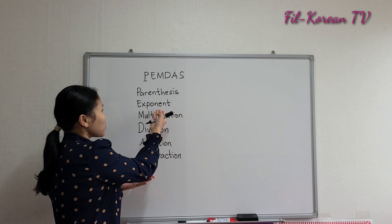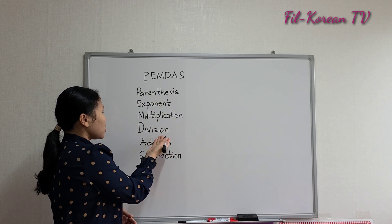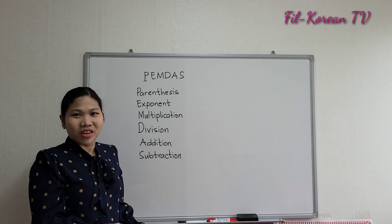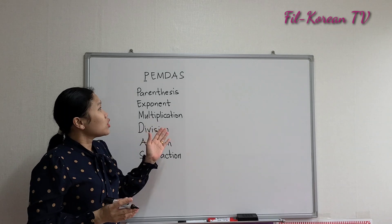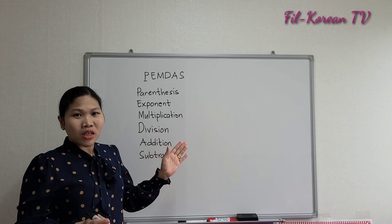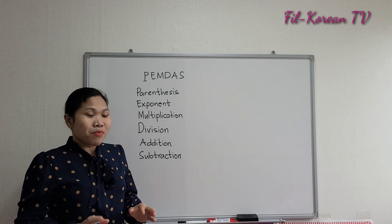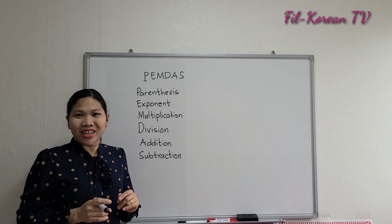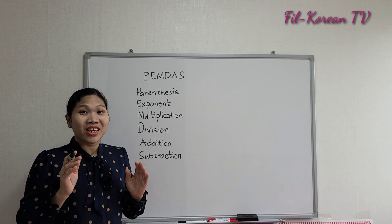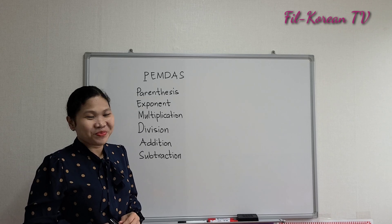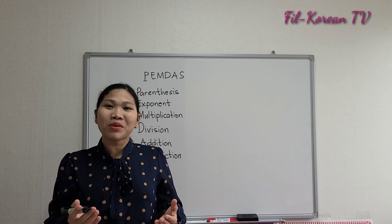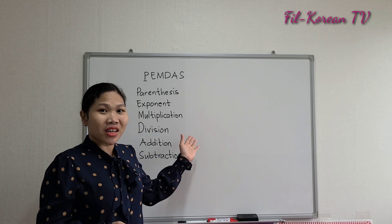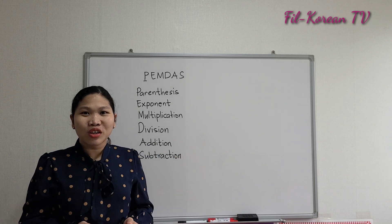Parenthesis, exponent, multiplication, division, addition, and subtraction. You need to follow the rules to get the correct answer. Because if you will not follow, surely, you can get the wrong answer. I'll show some examples for you to understand this rule.